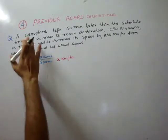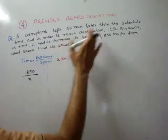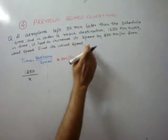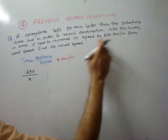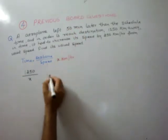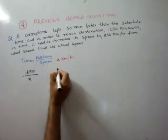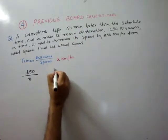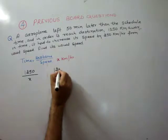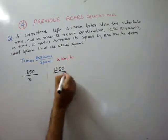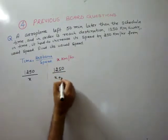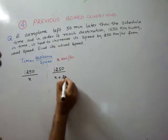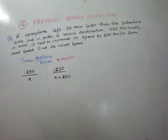In the second case, he increased his speed. The distance is the same — 1250 km — so the time becomes 1250 by (x + 250).